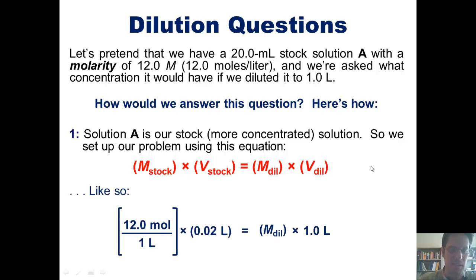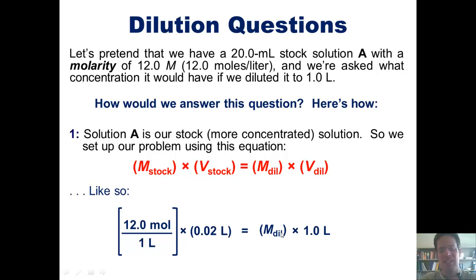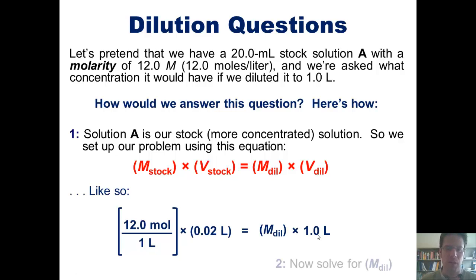We set this up keeping in mind that the concentration of our stock solution is 12 moles per liter, and the volume of our stock solution is 20 milliliters or 0.02 liters. We've been asked to determine the concentration of the diluted solution if we diluted it to 1 liter. This is slightly different from our previous problems, but once we set it up correctly, it's just simple algebra. So now we solve for M-dill, which I'll let you do on your own.